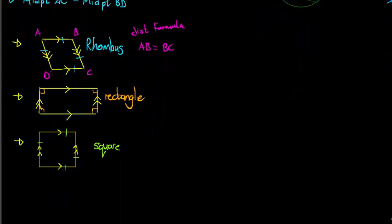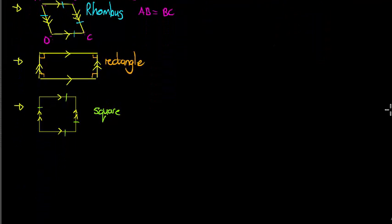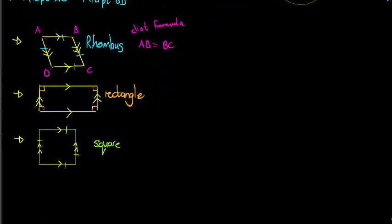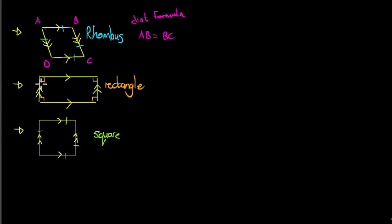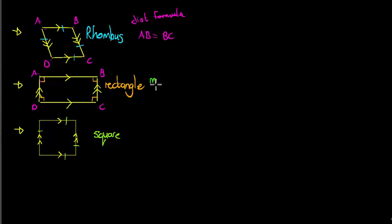The next step: if I had to show it's a rectangle, I need to show that the gradient of AB times the gradient of BC equals negative one. Remember, if two lines are perpendicular, their gradients multiply to give negative one. So to prove it's a rectangle, I show that those gradients multiply to negative one.